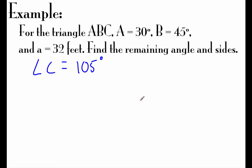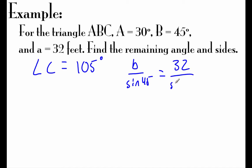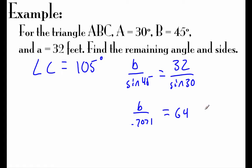Now we can find the missing sides. For side B, we set up B over sine of 45 degrees equals side A, which is 32, over sine of angle A, which is 30 degrees. Typing the right-hand side into our calculator gives 64. The sine of 45 degrees is about 0.7071. Multiplying that decimal over to the right-hand side, we get side B to be about 45.25 feet.